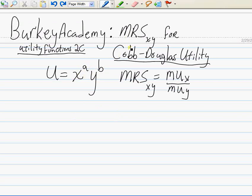If we want to find the marginal rate of substitution of x for y, what's the slope of an indifference curve, we take the marginal utility of x and divide it by the marginal utility of y.